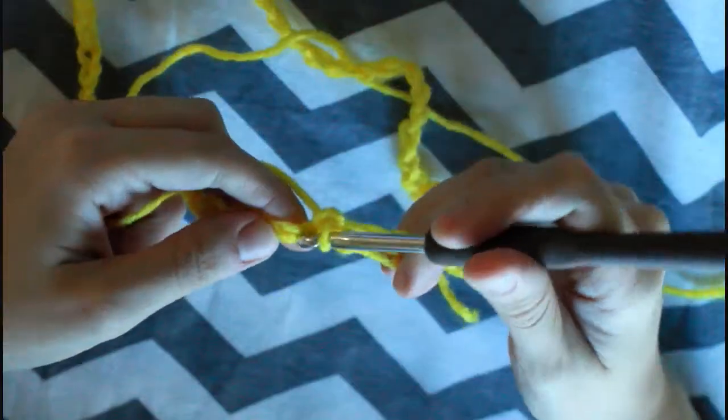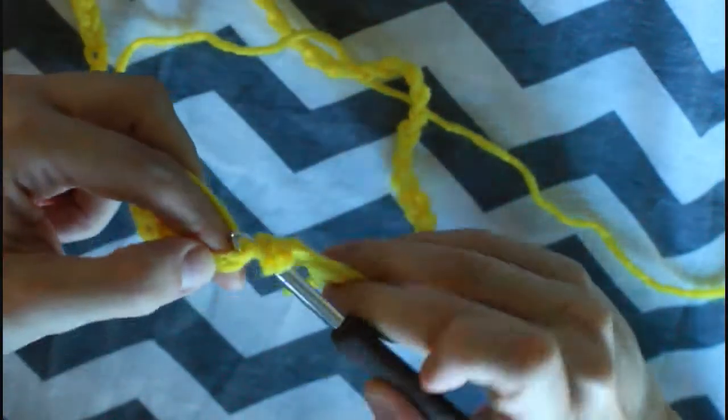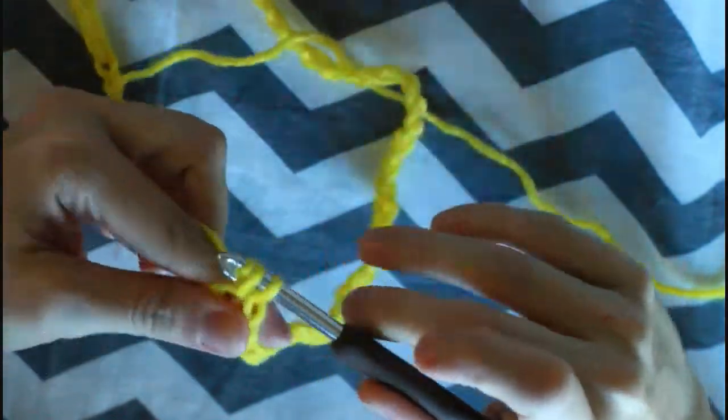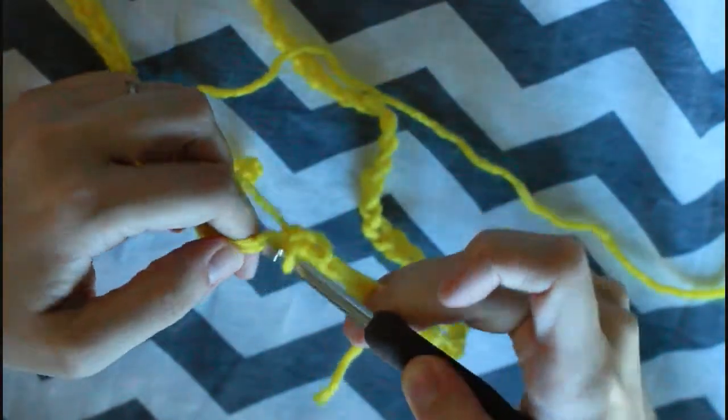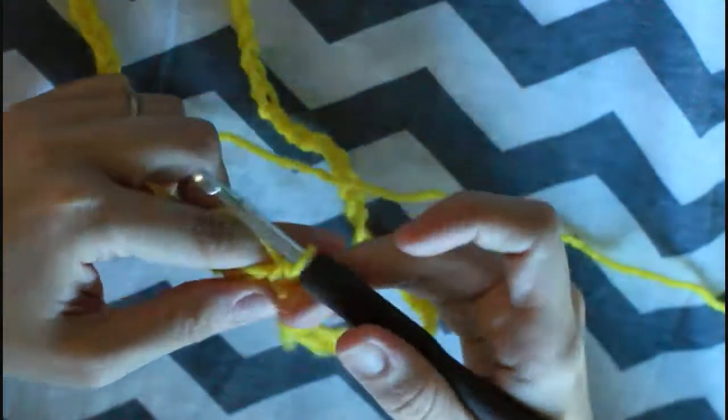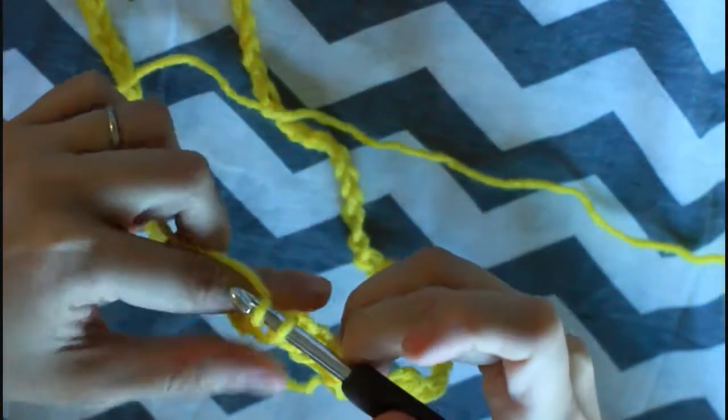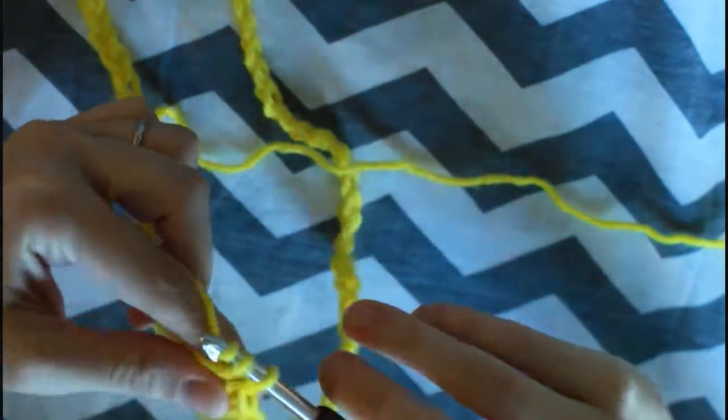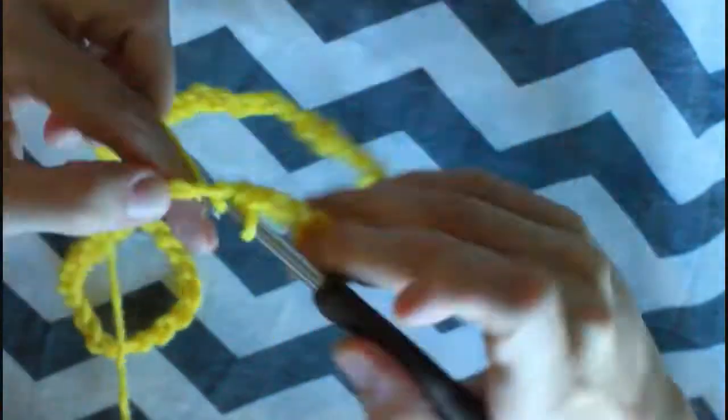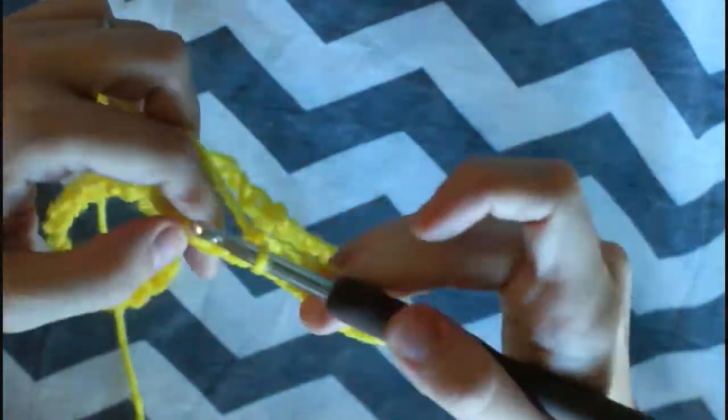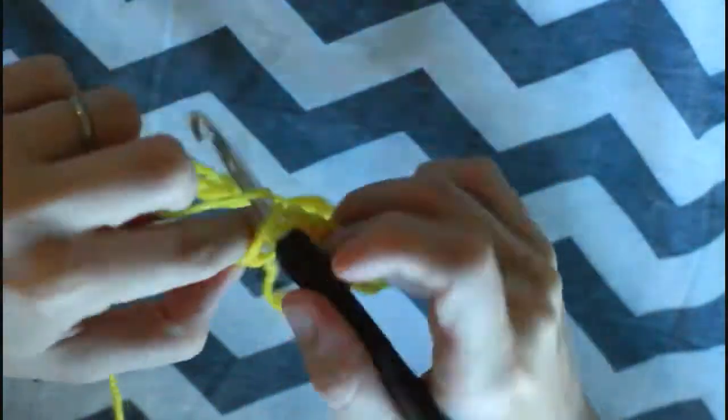Chain 1, and we're gonna do a single crochet all over this round. That will be 60 single crochet. Again, if you need a reminder, I will leave a link to a video when I explain it and I do a tutorial on the single crochet.